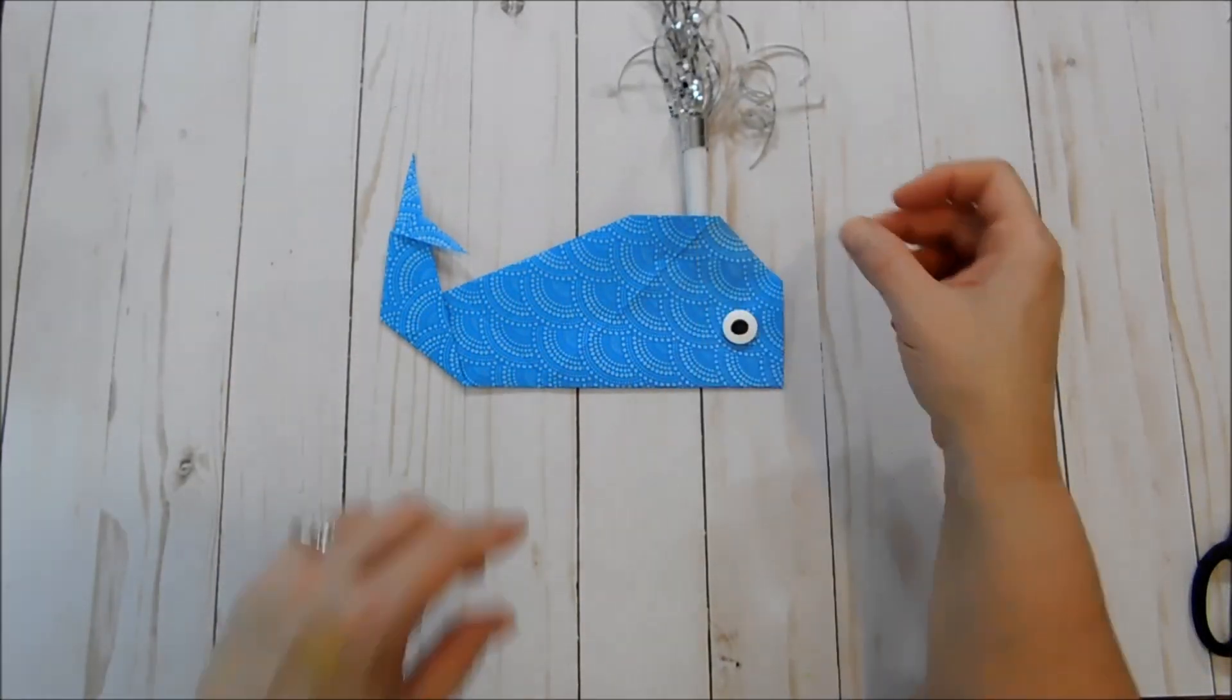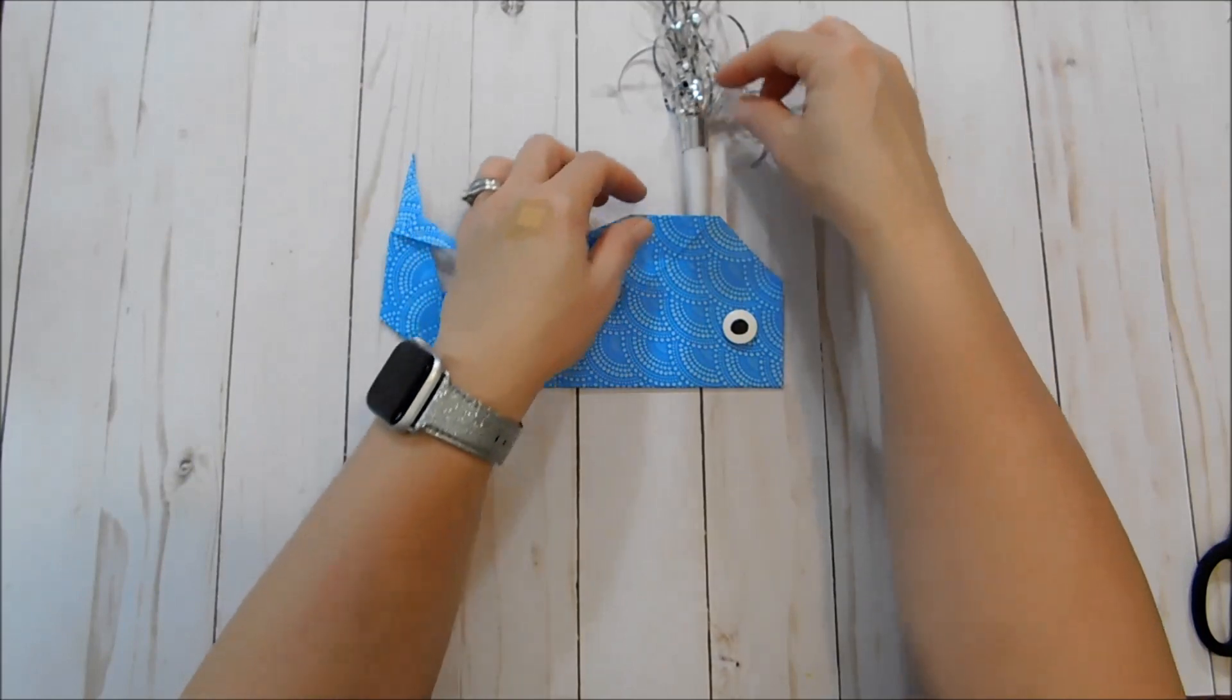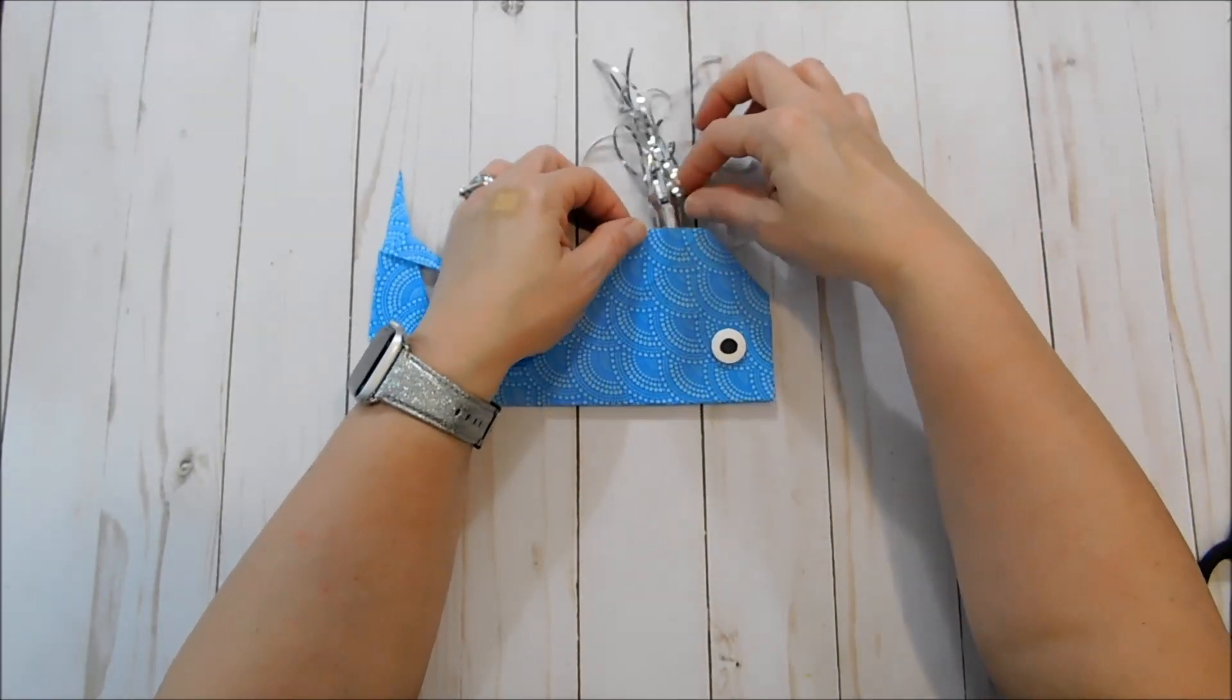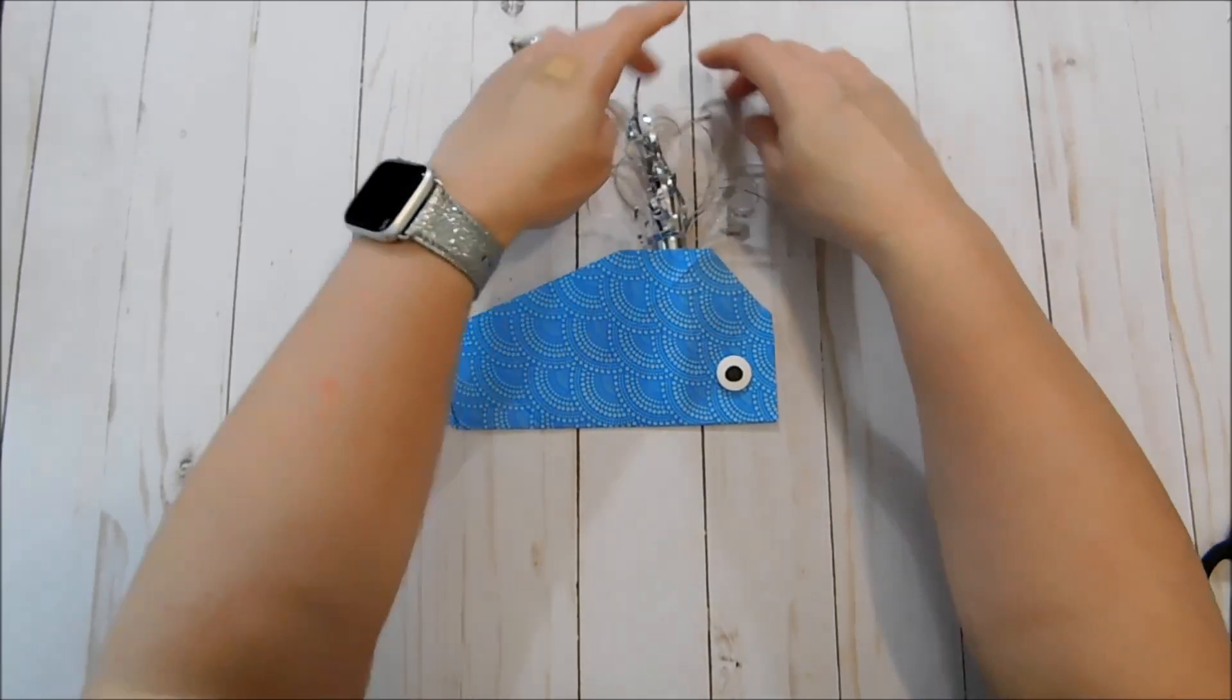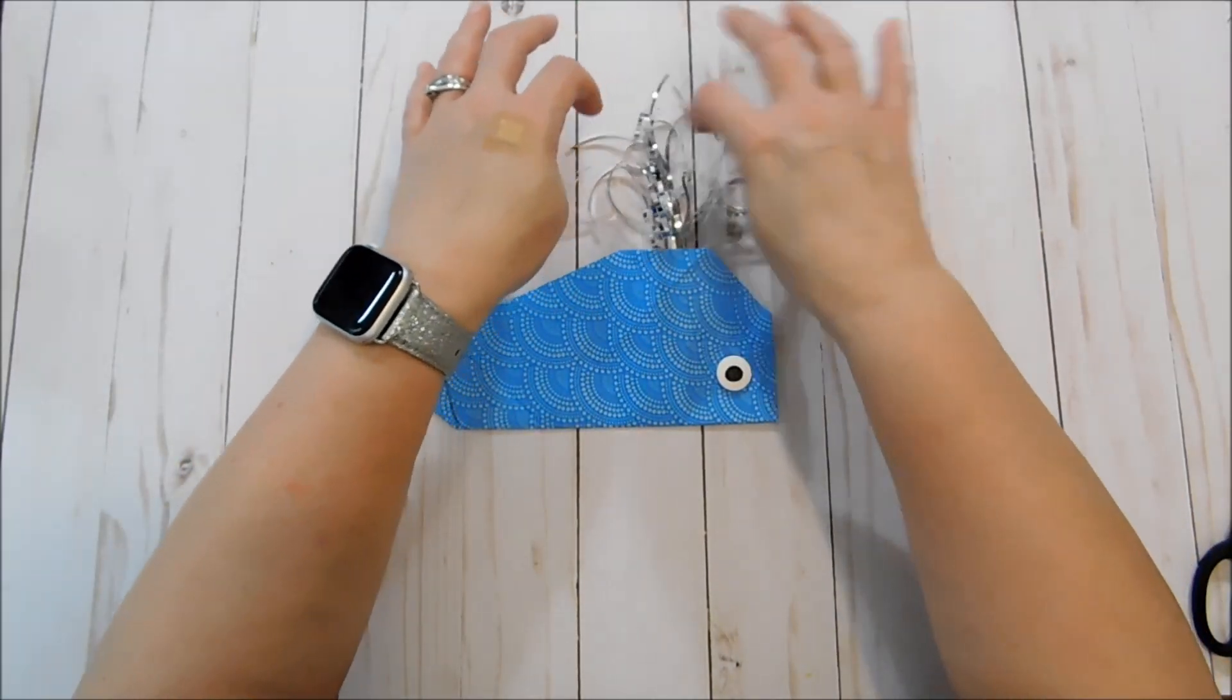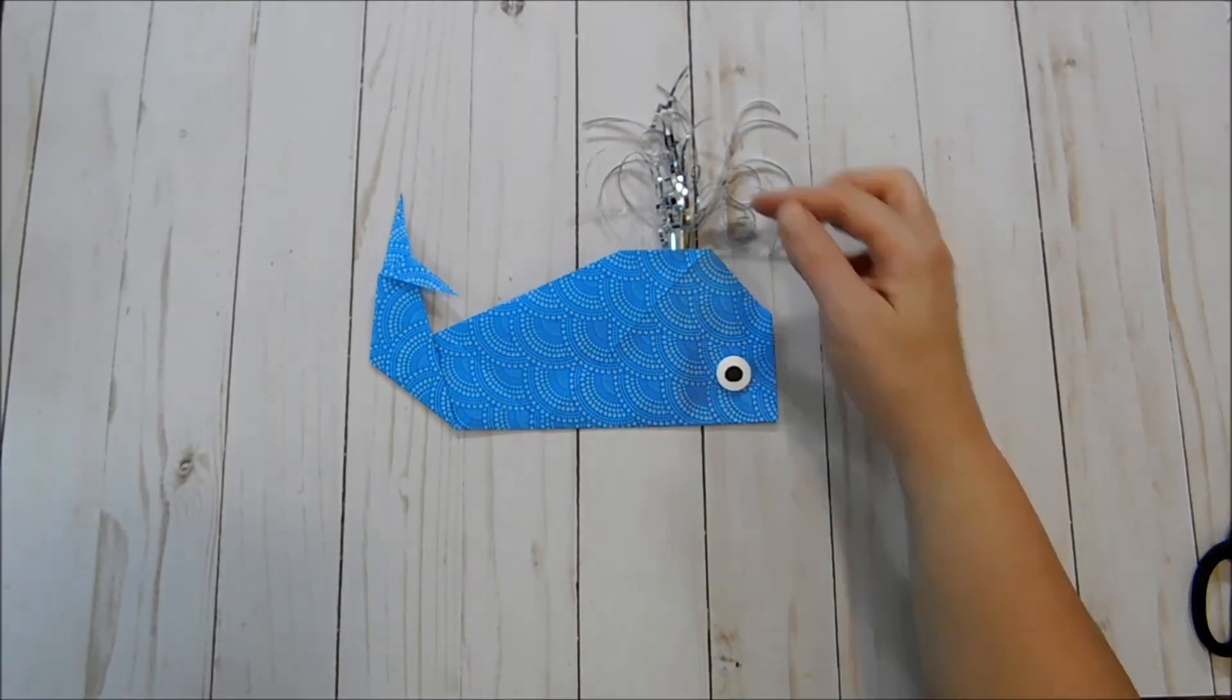So that looks like a really cute little water fountain there. I'm just going to tuck that down inside the napkin so that the blower part is hidden. And all you see is that fountain coming out of the top.